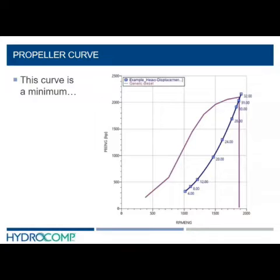If we take our vessel and its engine and slowly sea trial each speed in a steady state fashion, we can obtain the engine power and the speed at each RPM. This is a free running case where the vessel speed is unrestricted by towing or pushing.